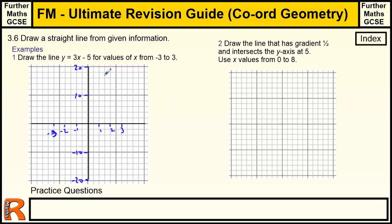I'm going to use the equation directly — y = 3x minus 5 — rather than plotting table values. That tells me the line goes through the y-intercept at minus five. From there, for every one unit across on my scale (two squares), I go up three units, which is one and a half squares on this scale. So: across one, up three; across one, up another three — working up the line point by point.